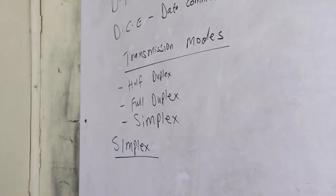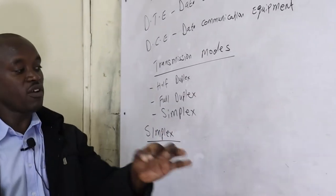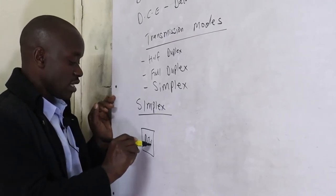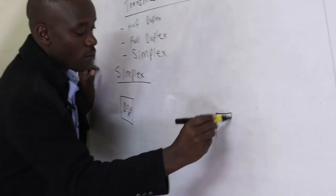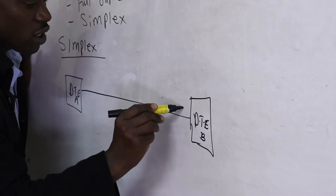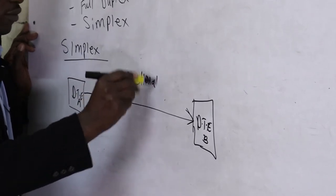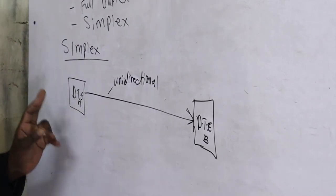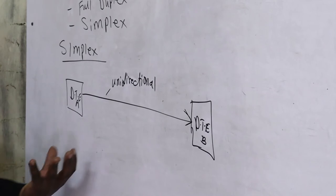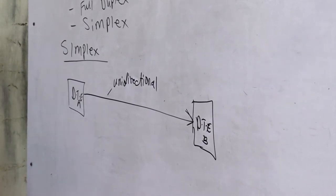Simplex refers to one-way communication — data goes only one way, there is no return path. If we have DTE A and DTE B, the arrow is unidirectional. Sometimes we call it unidirectional or one-way communication. This is used where we don't require an acknowledgement or response from the receiver — for example, military radio codes sent from a command to various units.